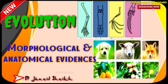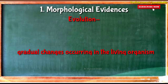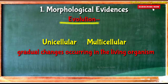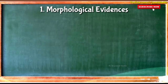Welcome to our YouTube channel. In this video we are going to discuss the morphological and anatomical evidences for Class 10 Maharashtra State Board. In the last video we discussed about evolution — evolution is the gradual changes occurring in organisms from unicellular to multicellular, and that is the key point of evolution. For their proof, many evidences are found.